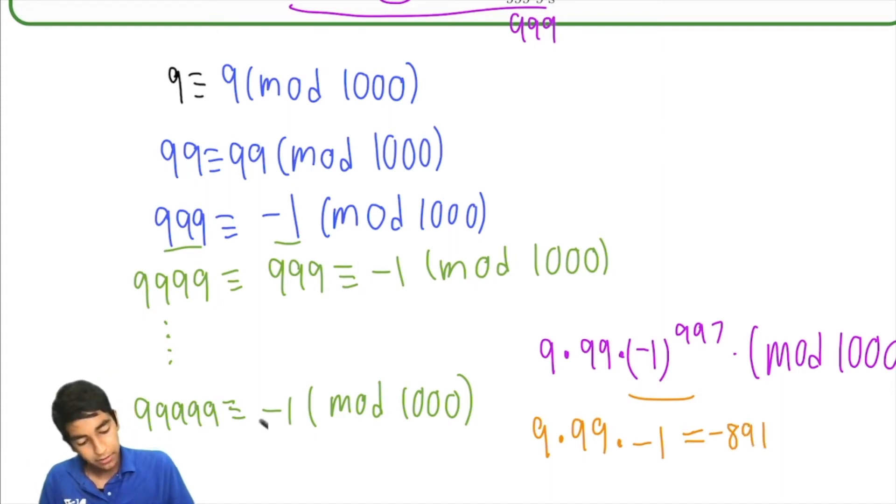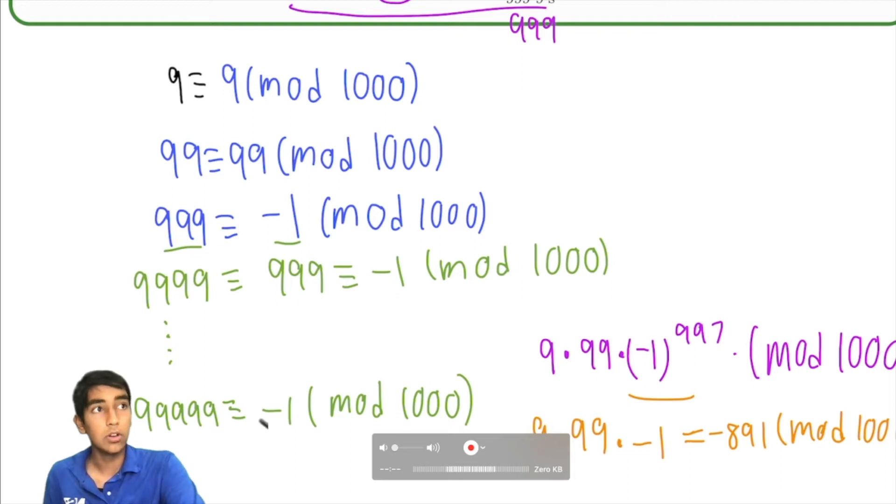And negative 891 mod 1,000 is very simple. It's just going to be equal to 109. So 109 is going to be the answer for this problem.